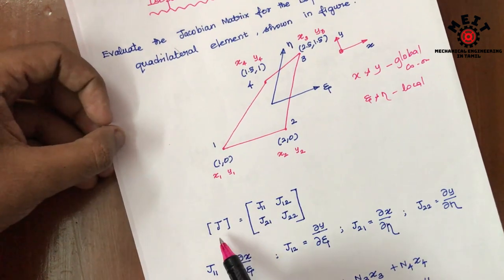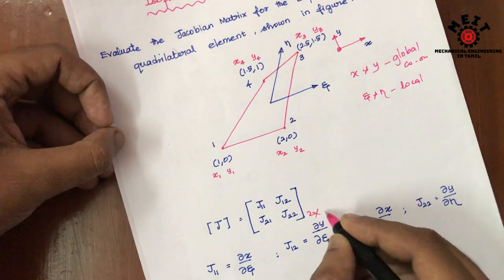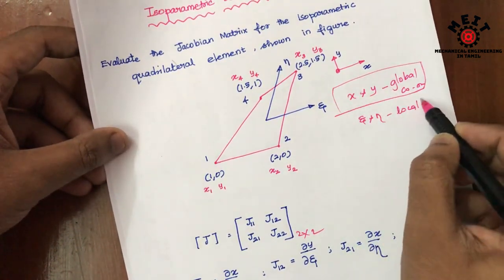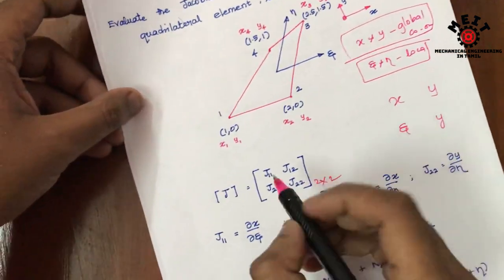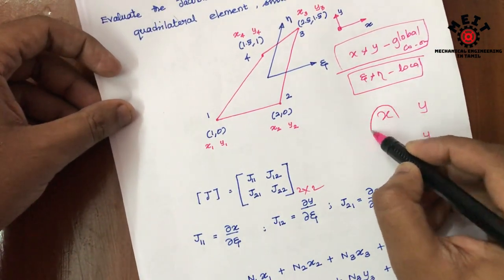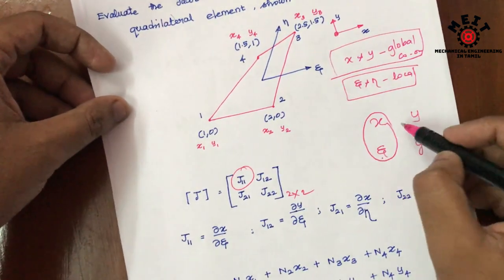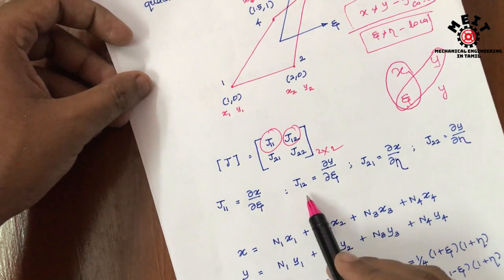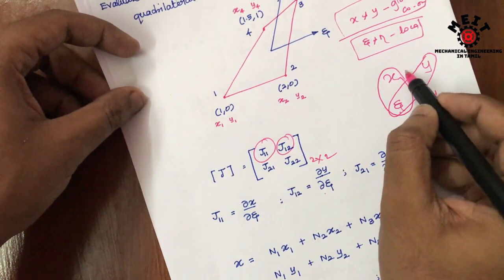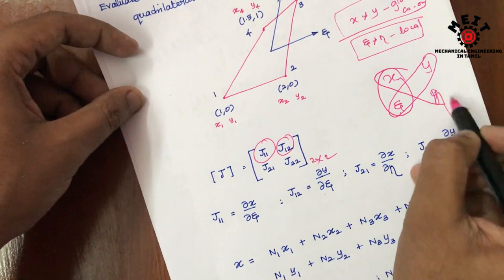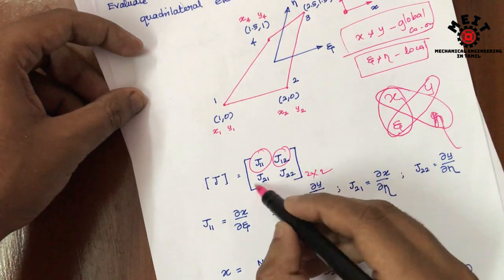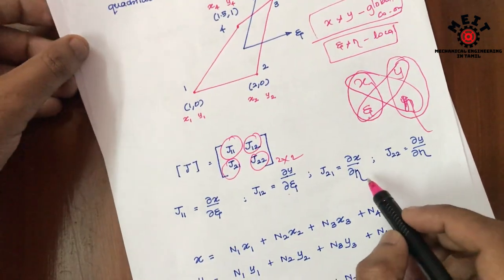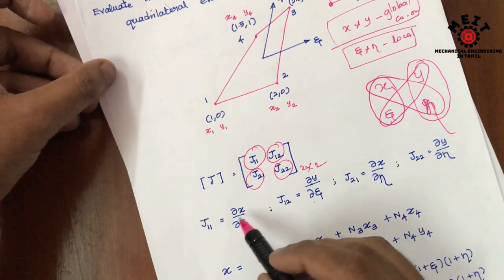What we need to calculate is the Jacobian matrix. The J matrix is a 2×2 matrix with entries J11, J12, J21, J22. It involves the partial differentiation of x and y with respect to epsilon and mu. So J11 = ∂x/∂epsilon, J12 = ∂y/∂epsilon, J21 = ∂x/∂mu, and J22 = ∂y/∂mu.